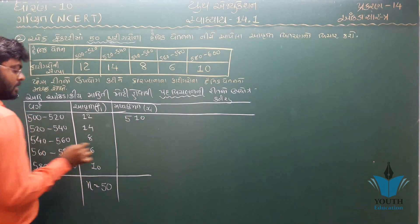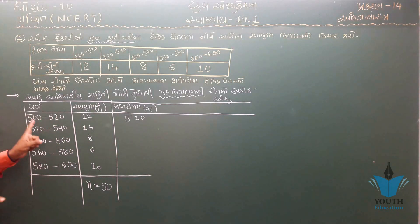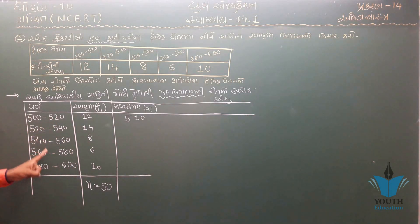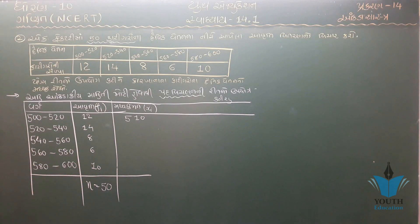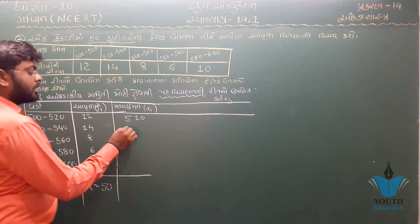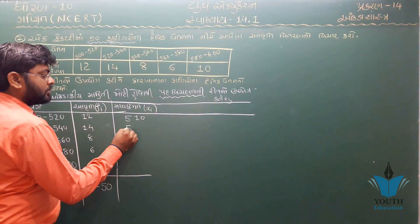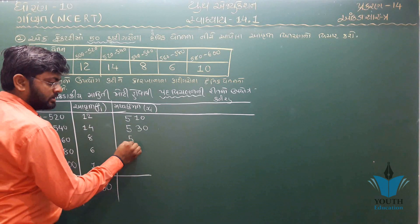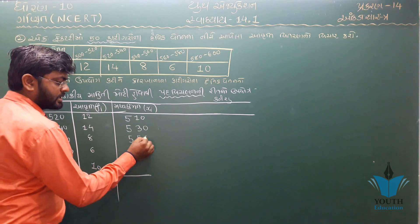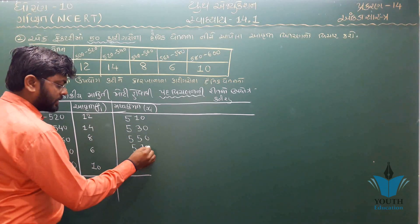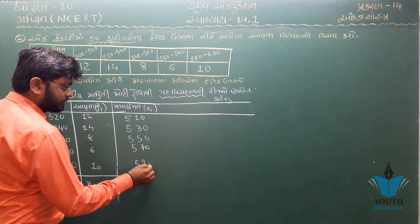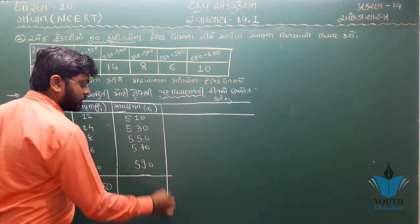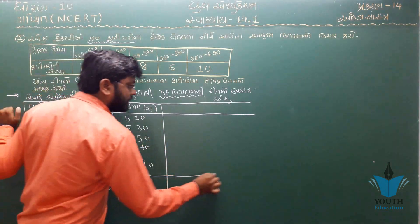Step Deviation (u) = (x − A) / h, જ્યાં h = 20. u ની કિંમતો: (510−550)/20 = −2, (530−550)/20 = −1, (550−550)/20 = 0, (570−550)/20 = 1, (590−550)/20 = 2. આ પ્રમાણે u = −2, −1, 0, 1, 2 મળે.